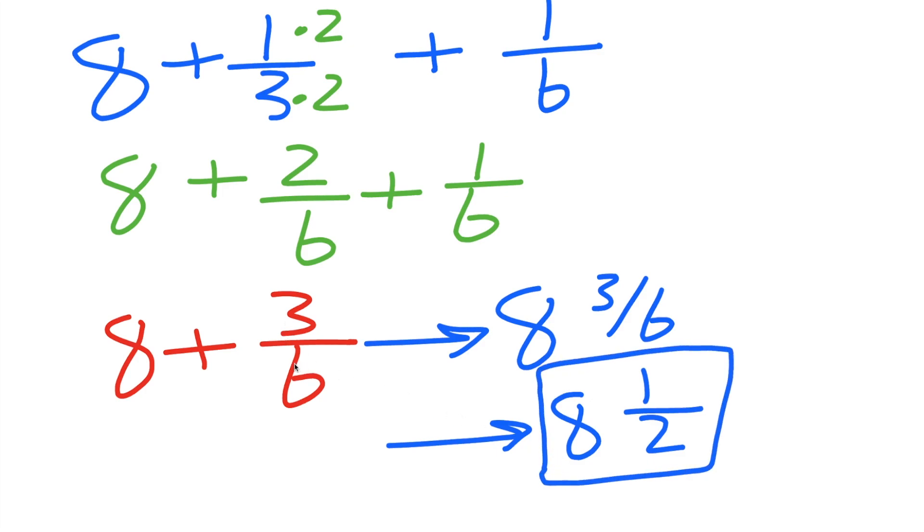And 3 divided by 6, that makes sense as 1/2. It's like you have, let's say, $3, and you have 6 friends. Each friend would get like 50 cents. It's the same thing as 1/2.